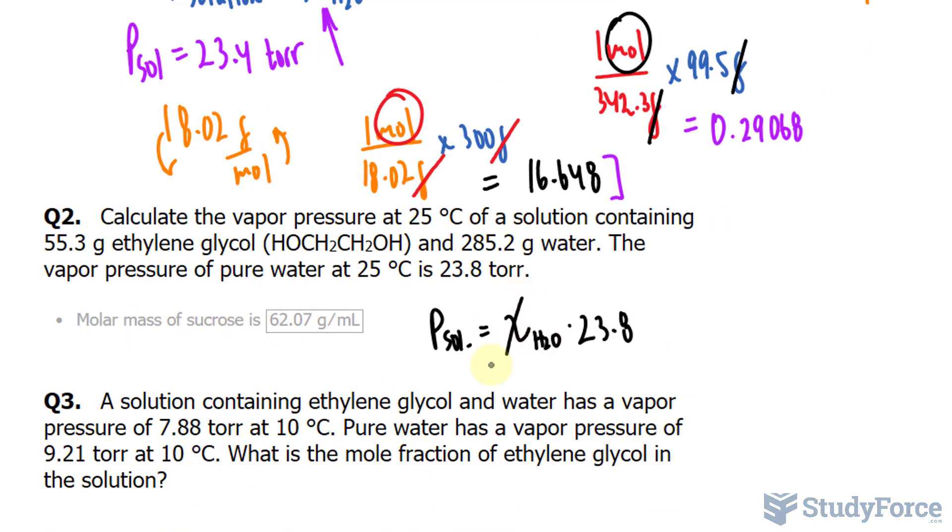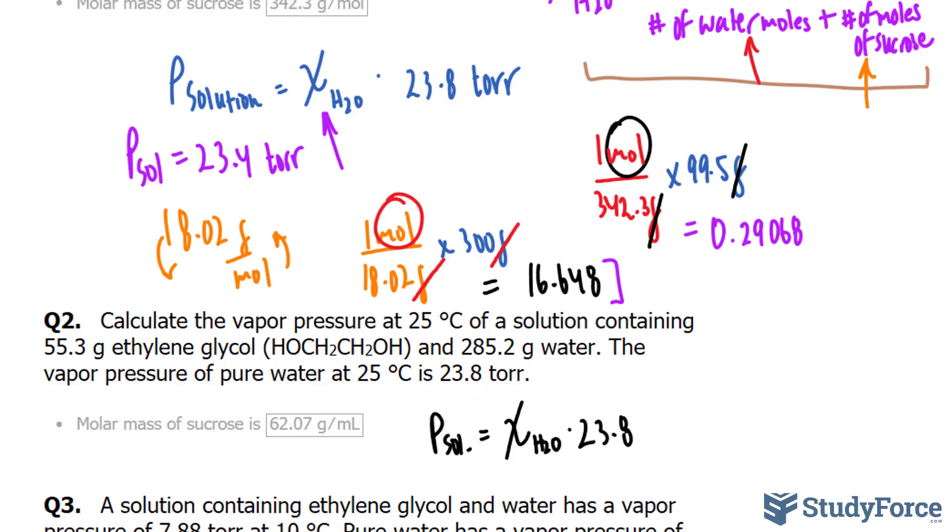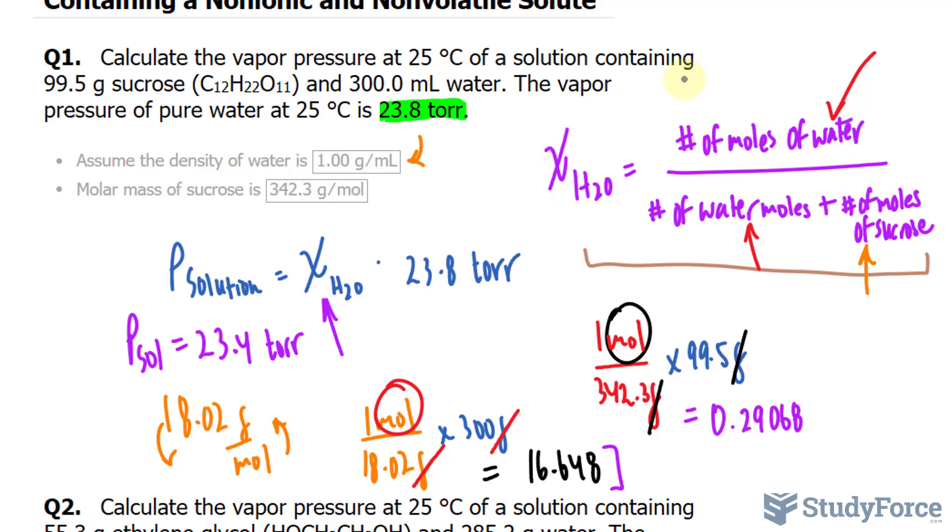Remember that this is the mole fraction of H2O, and that's calculated according to question number one like this, where we have the number of moles of water per the number of moles of water plus the moles of our solute. Here we had sucrose, but now we have ethylene glycol.